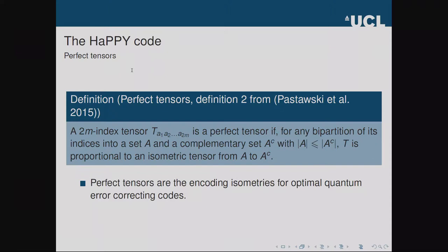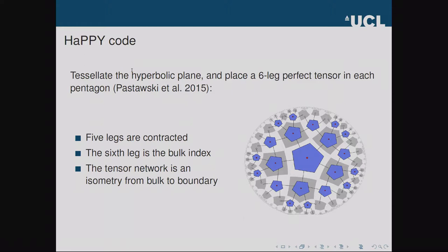The HaPPY code, which we build on in our work, is a tensor network toy model of ADS/CFT. The building blocks are a type of tensor known as perfect tensors, where a perfect tensor is defined as a tensor which is an isometry across any bipartition. It's been shown that interesting examples of perfect tensors exist and they are closely related to many concepts in quantum information theory. In particular, perfect tensors are encoding isometries for optimal quantum error correcting codes, which is why they link to ADS/CFT viewed as a quantum error correcting code.